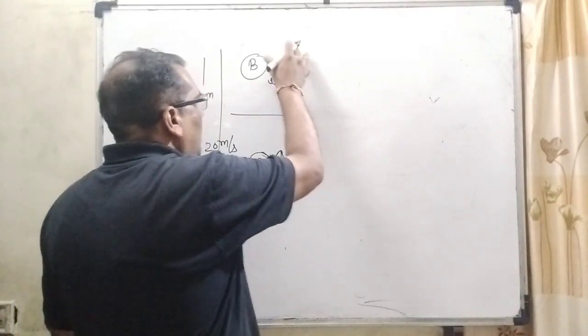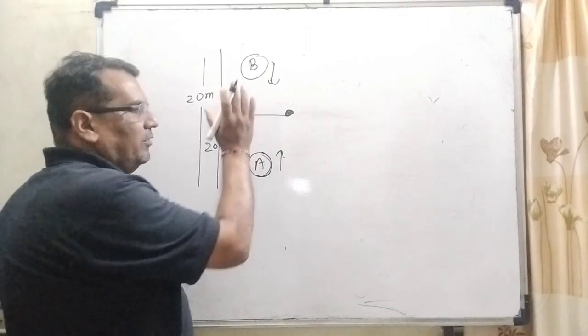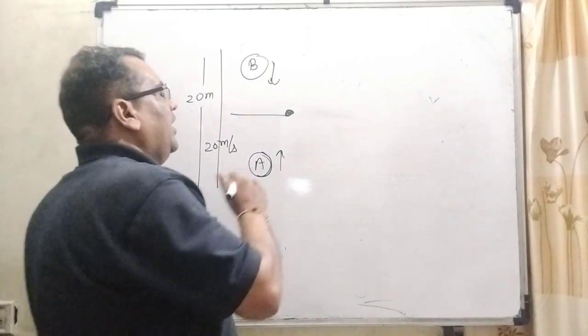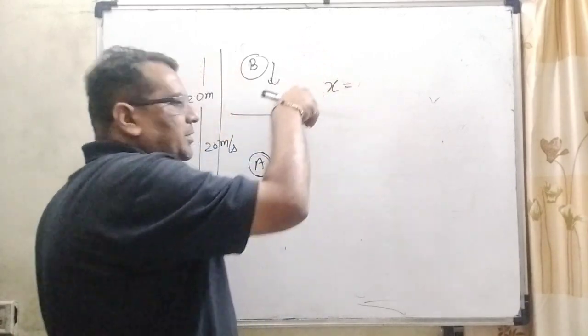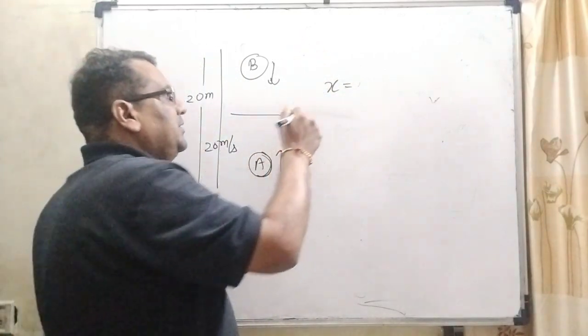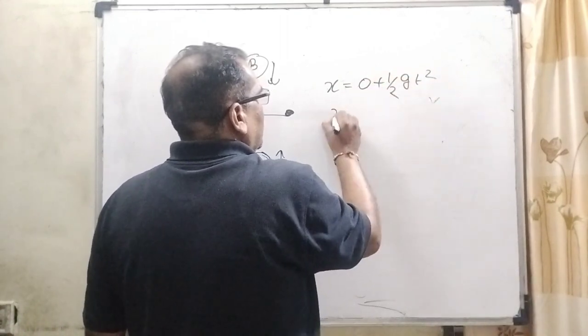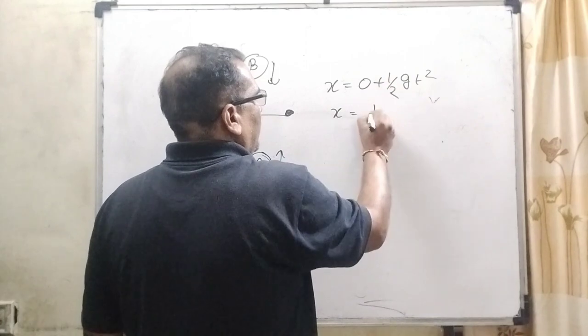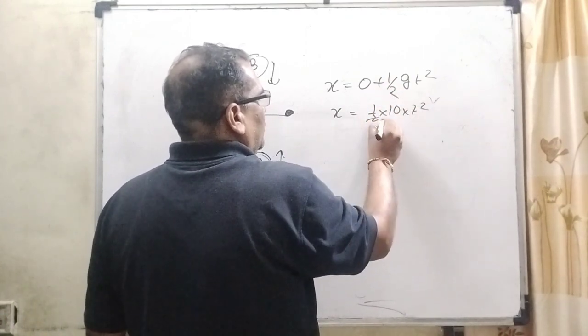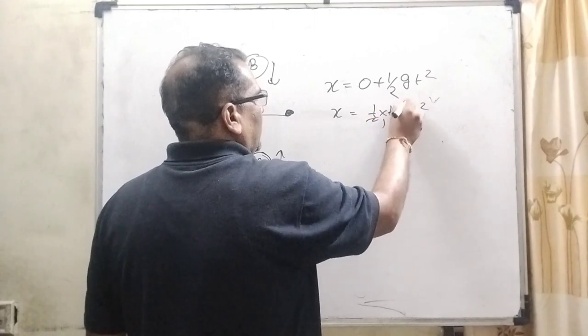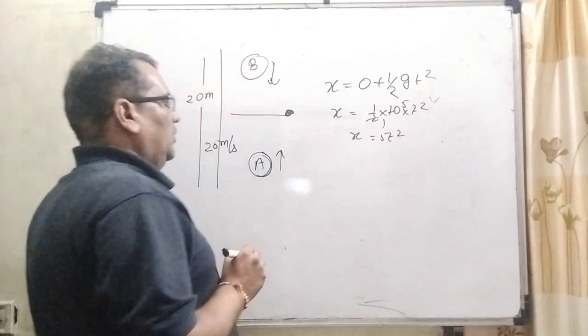Let us first find out how much distance covered by B and how much distance covered by A. Here we are using x equal to initial velocity is dropped, so initial velocity is 0. Then 1 by 2 g t square. So here x equal to 1 by 2, g taken as 10, and t square. So x equal to 5 t square.